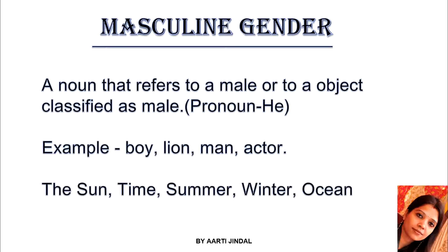Let us understand some more examples of masculine gender. The sun, time, summer, winter, ocean — these are some examples that show strength. That's why we consider these types of nouns in masculine gender.